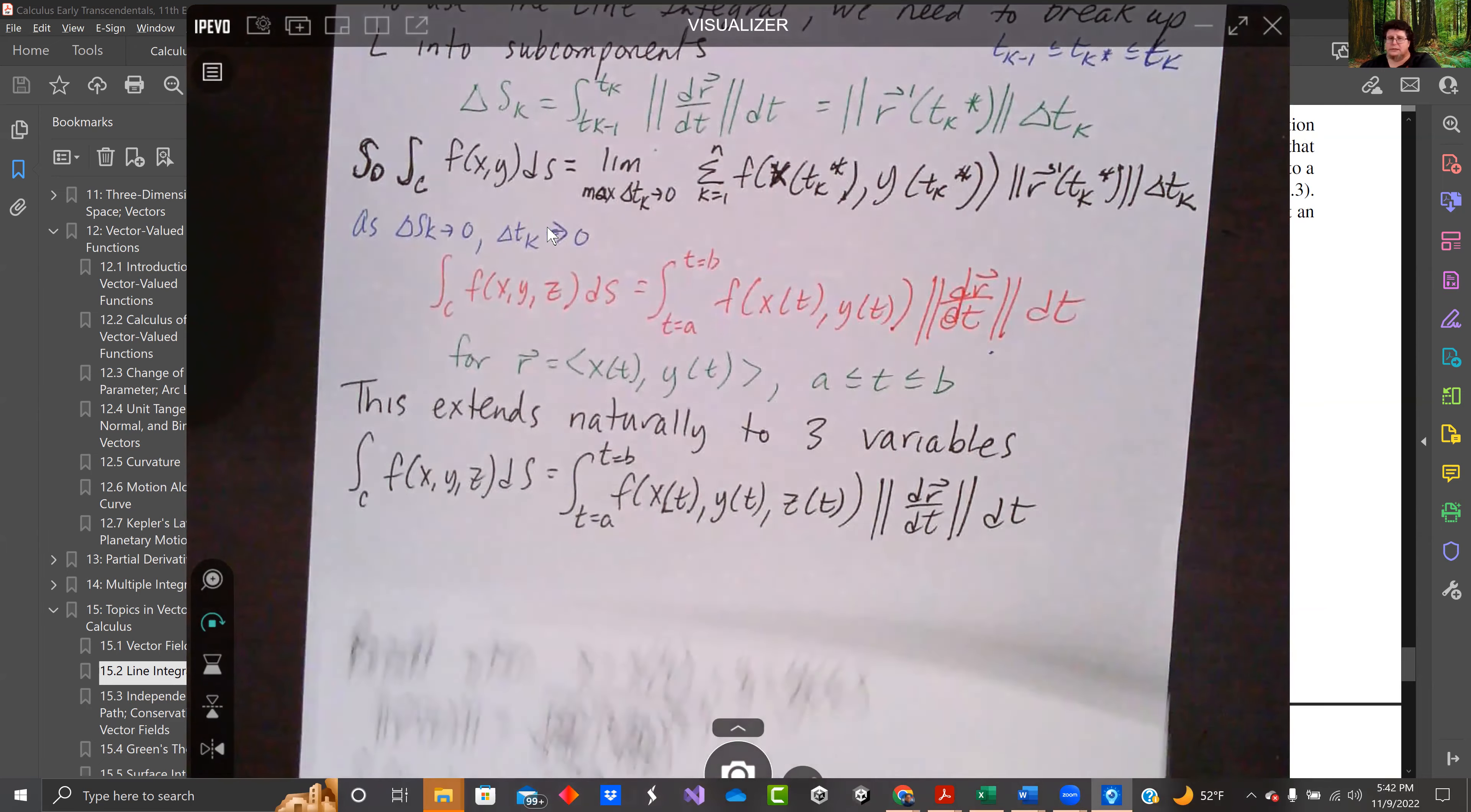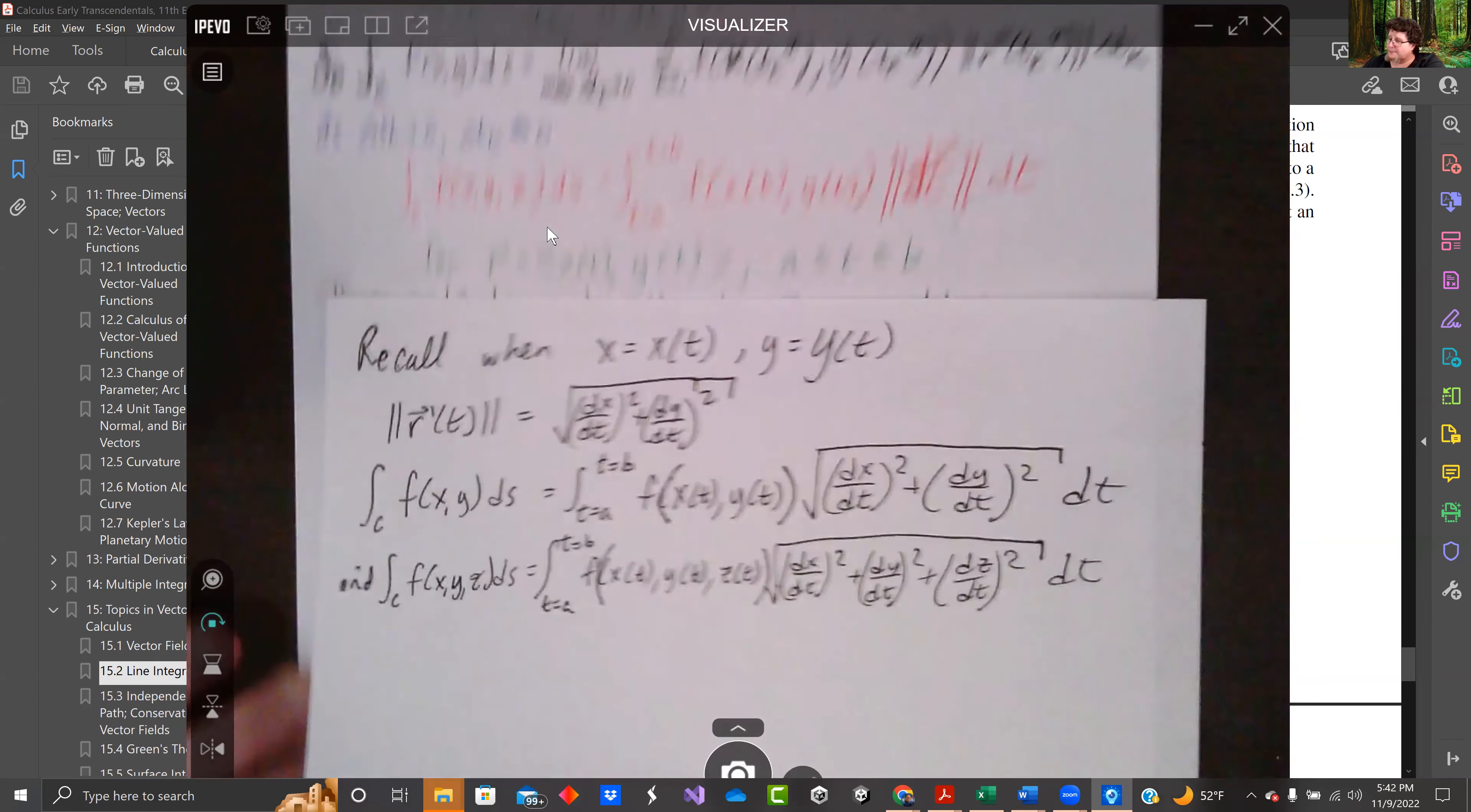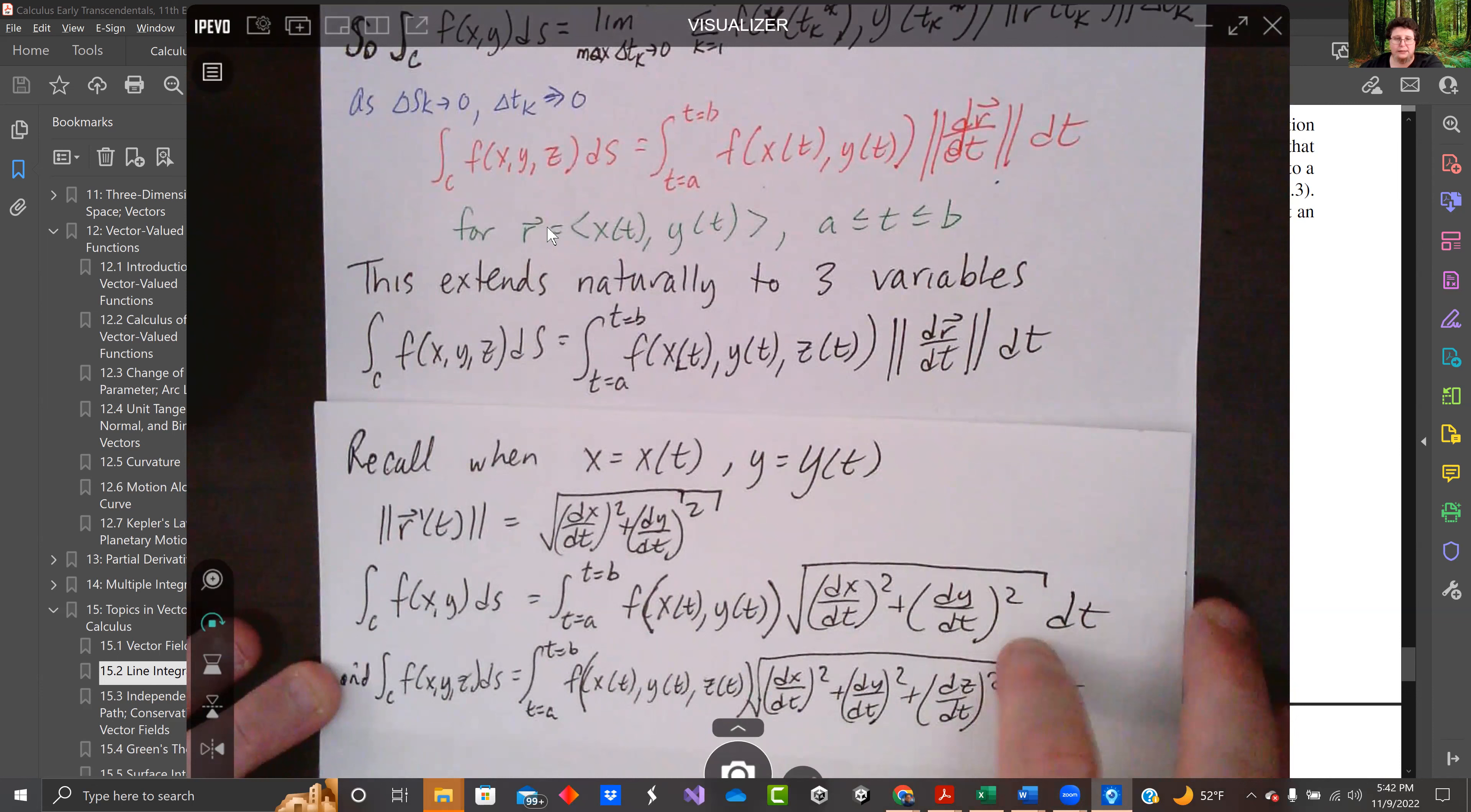I just want you to recall what that meant. The r'(t) was the dx/dt squared plus dy/dt squared, take the square root. That's this one up here. When we do the triple one, we just add in this dz/dt component. So the short notation is writing it like this, this is what we're actually going to be doing. We'll check it out in the next video. Peace.